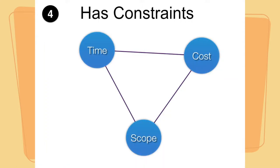Fourthly, a project has constraints. This is the traditional project quality triangle, as it is sometimes referred to, or also referred to as the triple constraint of time, cost, and scope. Normally our projects do not have an unlimited amount of budget or unlimited scope, and they certainly do not have an unlimited amount of time in which they can be completed.